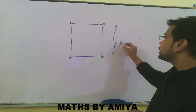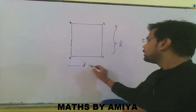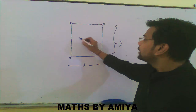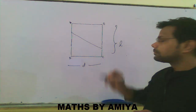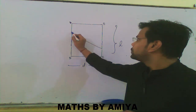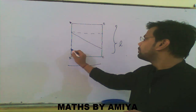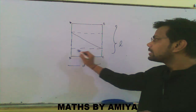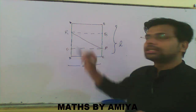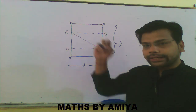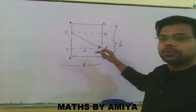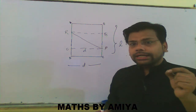Say the complete length is l and the paper is d units wide. We pick vertex D and put it to B. We will get a line here — this line is the crease. If we join this line parallel to AB and DC, we can say the figure OPQR is nothing but a rectangle.